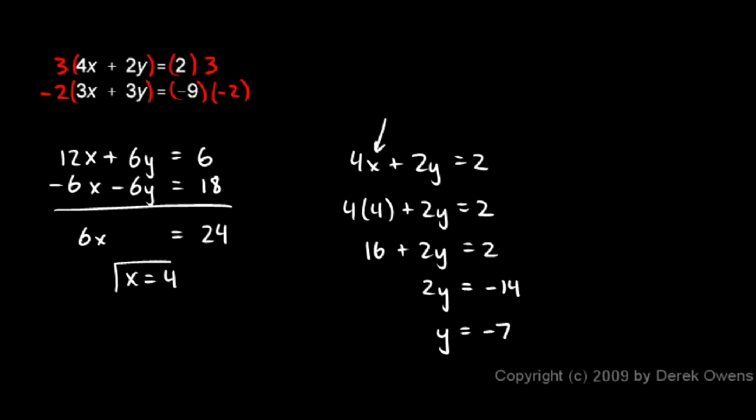So I have my solution to the system, a value for x and a value for y. The values x equals 4 and y equals negative 7 satisfy this first equation and this second equation. So that is the solution to the system of equations.